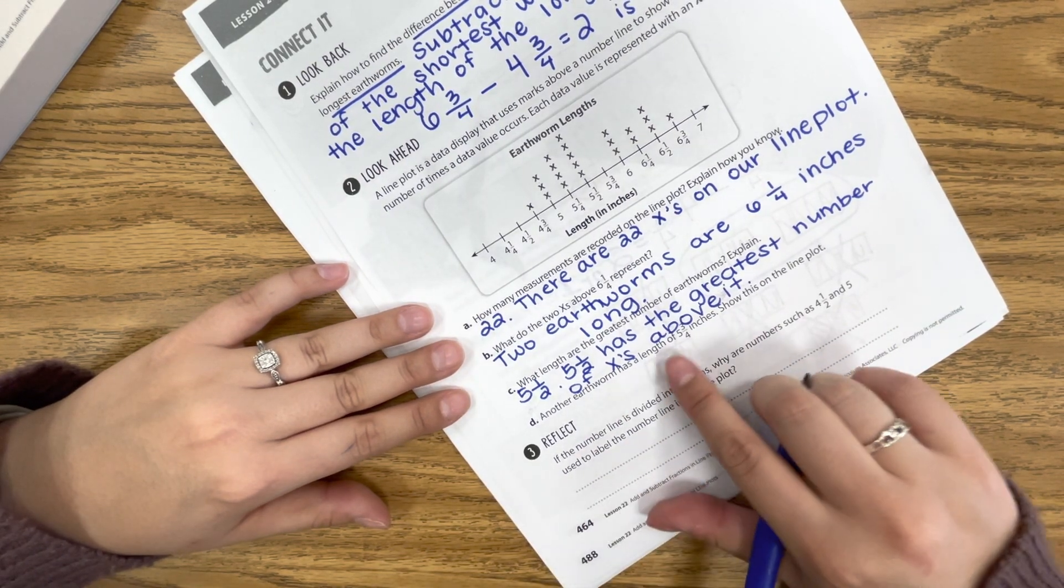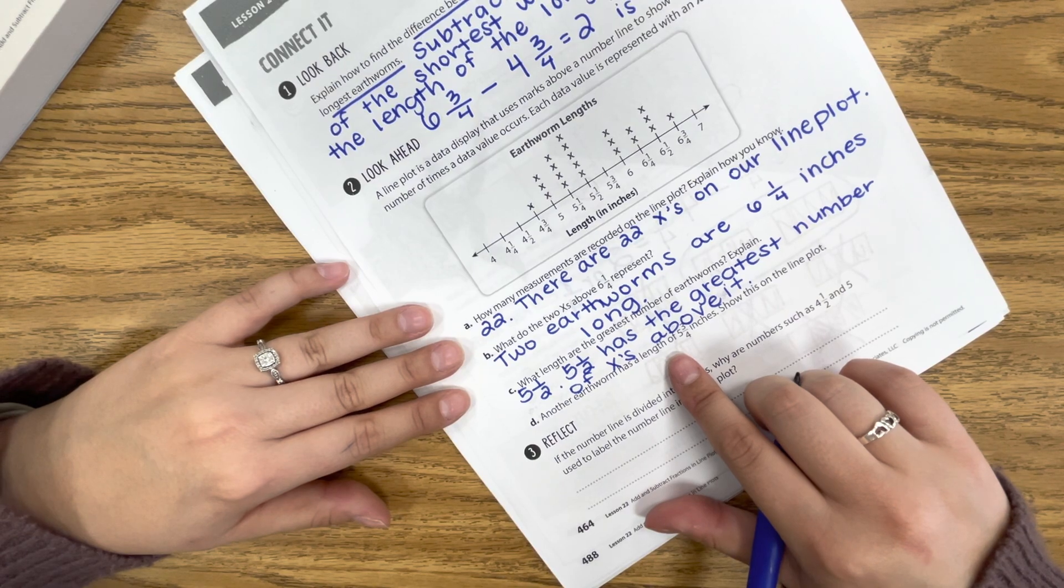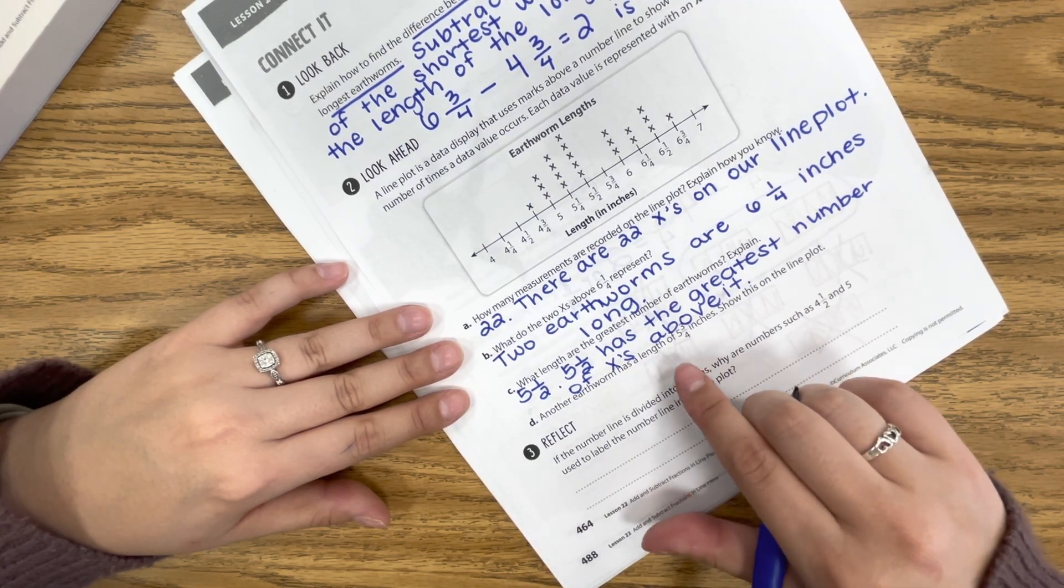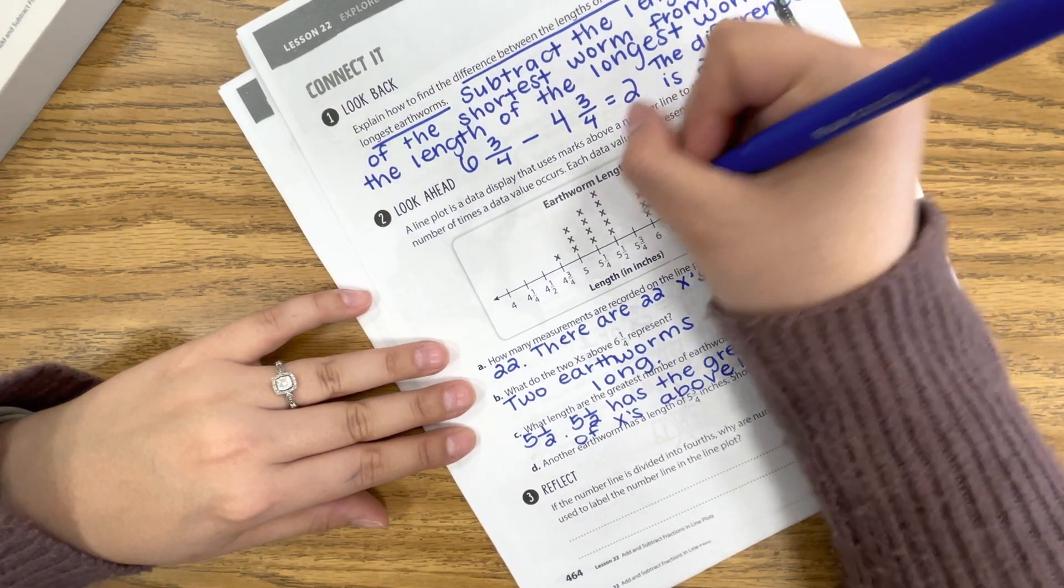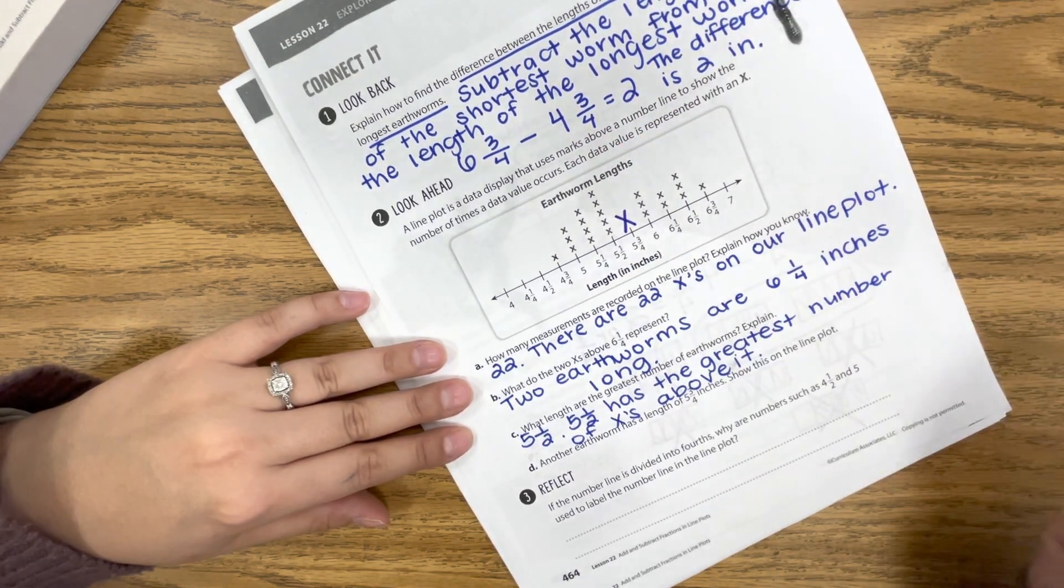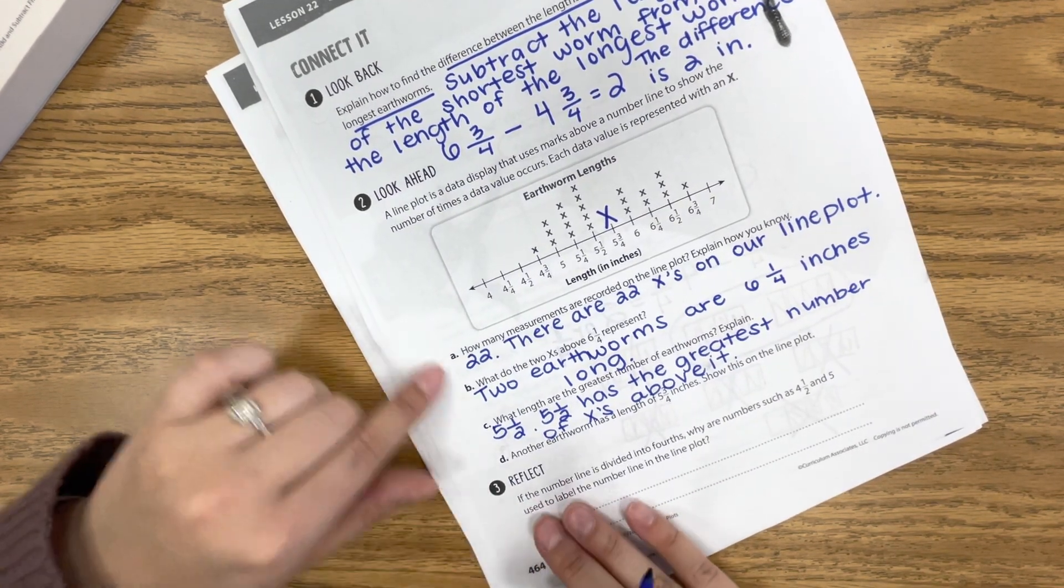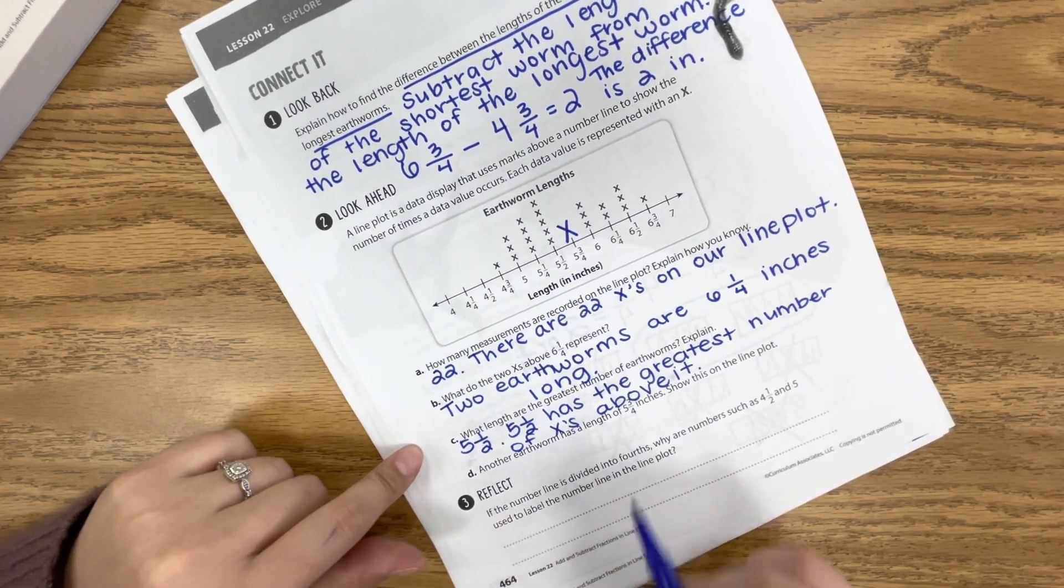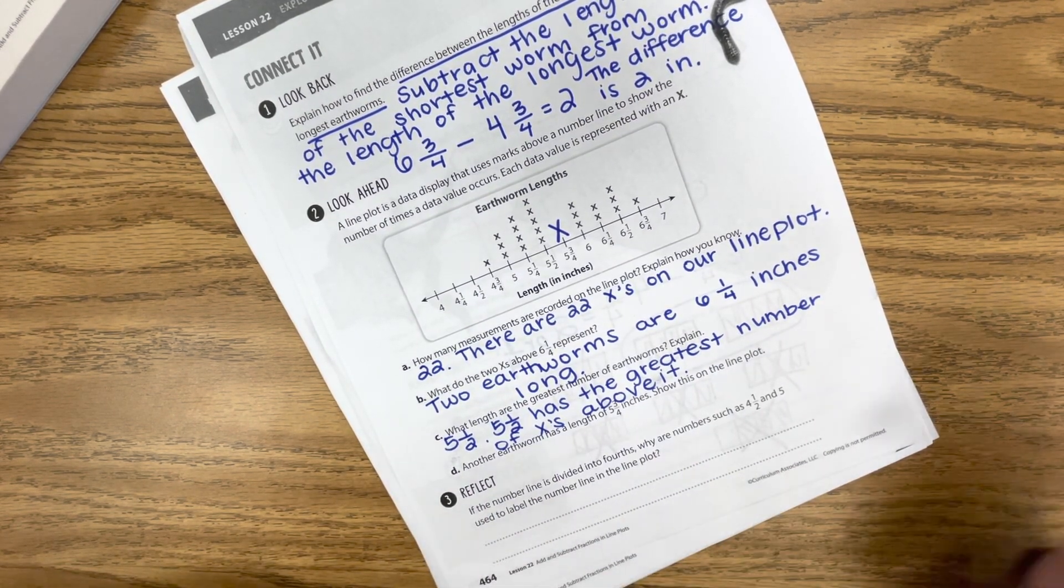So another earthworm has a length of 5¾. Show this on the line plot. So we have to go to our measurement of 5¾, and then we have to just pop our X in. We have one earthworm that is now 5¾. We found another one. So this is just practice with reading our line plot and then also adding data to our line plot. But this is only day one, so we will get more practice.